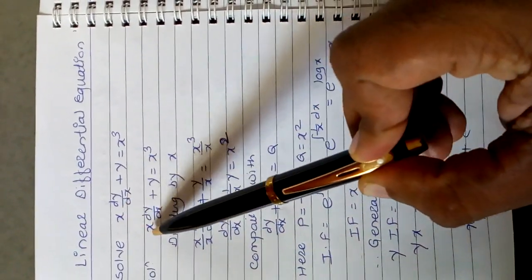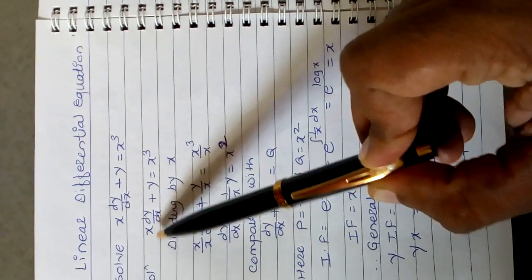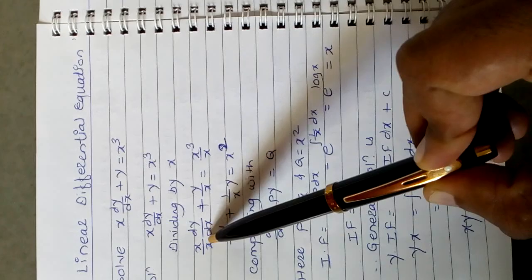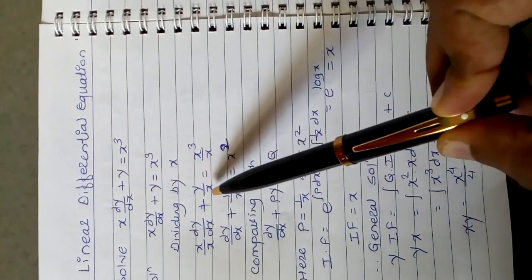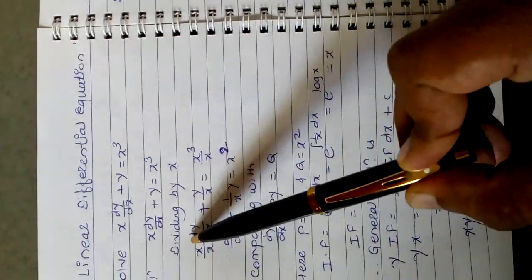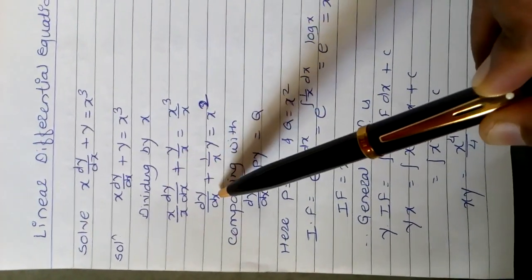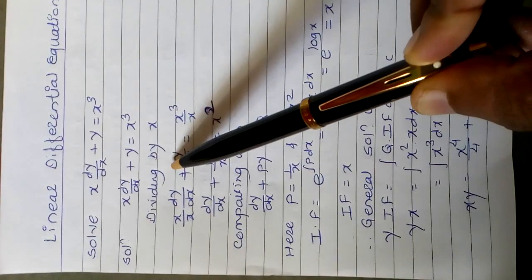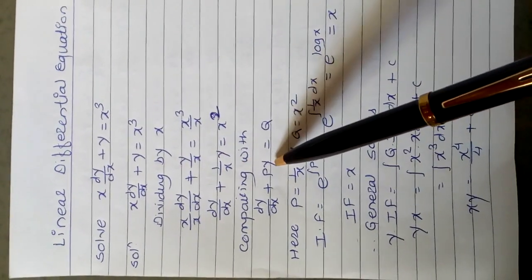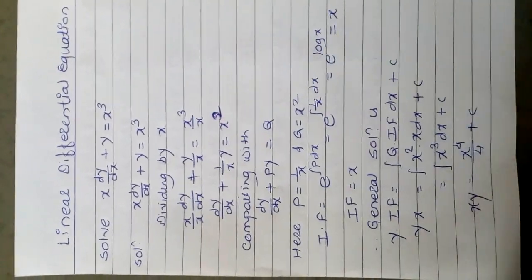Therefore we have to divide this equation by x, since we don't want x in the first term. Dividing throughout by x, we get dy/dx plus y divided by x equals x cubed divided by x. Here x divided by x cancels, leaving dy/dx plus (1/x)·y equals x squared.